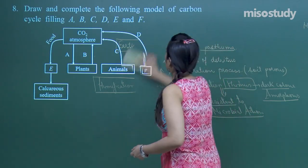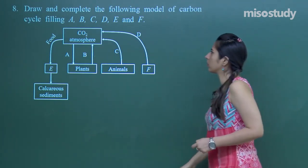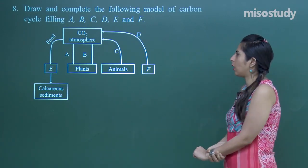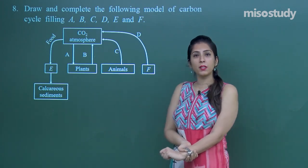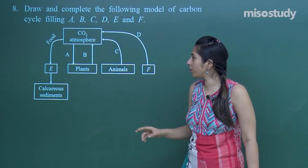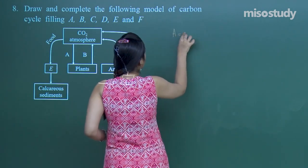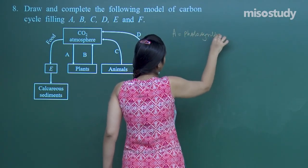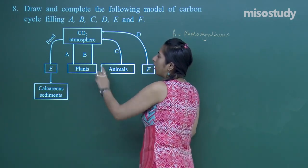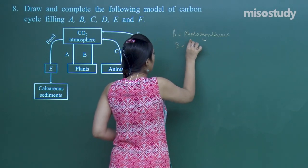Question number eight: draw and complete a model of the carbon cycle, filling in A, B, C, D, E, and F. The reservoir in the carbon cycle is the atmosphere, where CO₂ is present. CO₂ taken by plants through photosynthesis — so A means photosynthesis. Plants also release CO₂ through respiration — B means respiration.